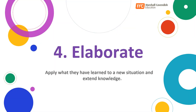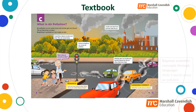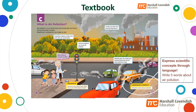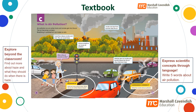In this phase of the cycle, students expand their knowledge and apply it to other situations or contexts. Write 5 words about air pollution. Ask students to research about the air pollution in their city. Does their city have bad air pollution? What can be done to reduce air pollution?